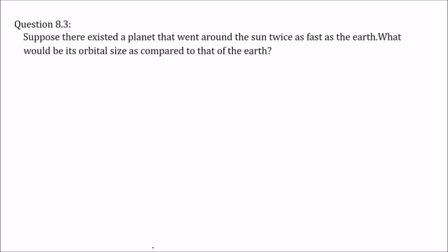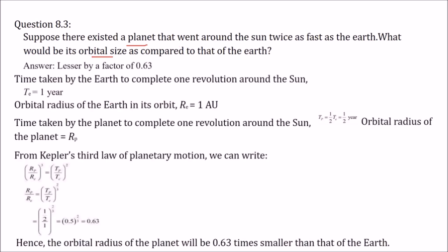Suppose there existed a planet that went around the sun twice as fast as the earth — what would be its orbital size as compared to that of earth? Sawaal yeh hai ki ek aisa planet hai jo earth se twice as fast sun ke around jaata hai — do guna tezi se. Kya orbital size hoga iska earth se compare karein toh? Toh iska uttar hai: less than, a factor of 0.63.